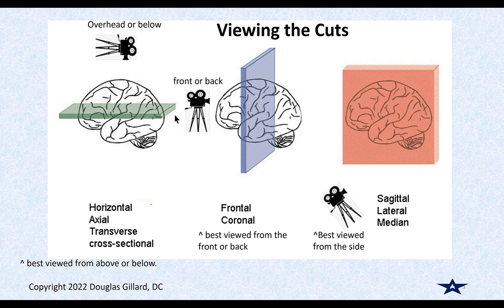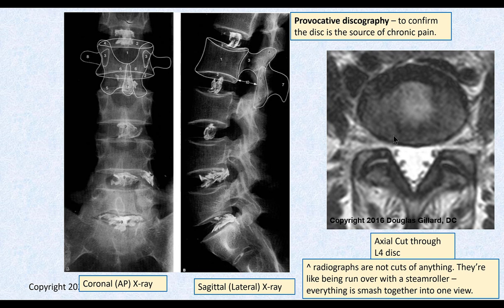If we have an axial cut through the brain, you don't look at it from the sides to see the cut. The green thing is the slice that's been made — like a slice of bologna. If you want to see the bologna, you have to get up above or below. For a coronal cut, you have to go in front or behind to see the cut. Same with a sagittal cut — you have to look from the sides to see it.